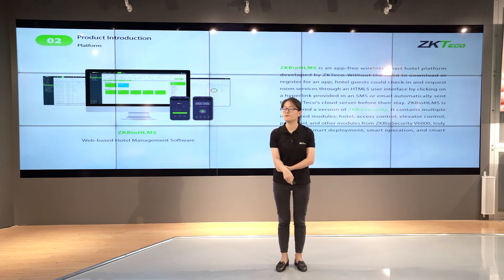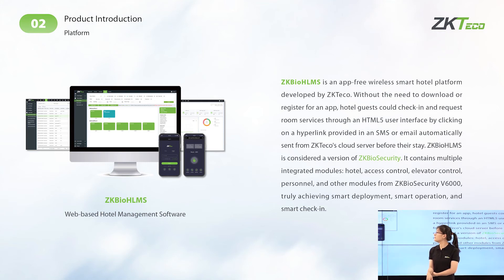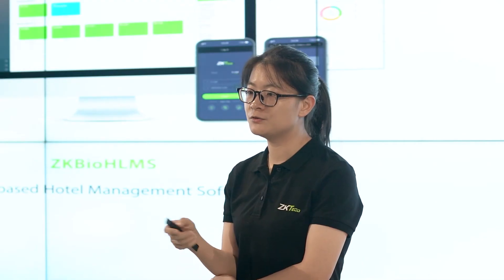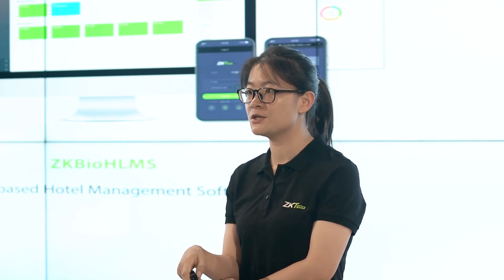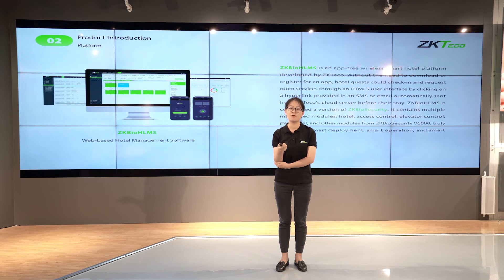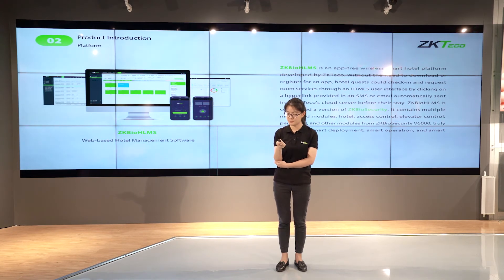Second is the platform. It consists of modular functions including hotel access control, and you can do all the hotel settings and hotel information settings. You can manage check-in and check-out, and check all the reports you need to see how the hotel locks are running. I will explain this in more detail in the coming pages.